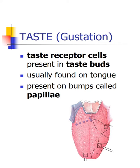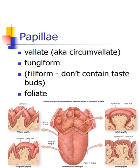Gustation is our sense of taste and uses chemoreceptors; however, they have to come in contact with a substance such as food or drink to experience its actual flavor. The gustatory or taste cells are taste receptors housed in specialized sensory organs called taste buds, found on the tongue's surface. On the dorsal surface of the tongue are epithelial and connective tissue elevations called papillae, with four different main types that respond to different types of foods.